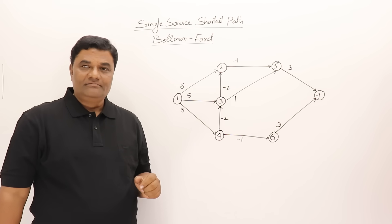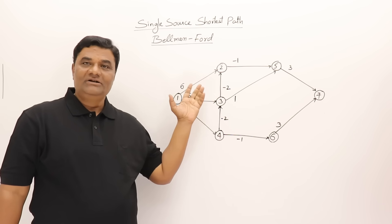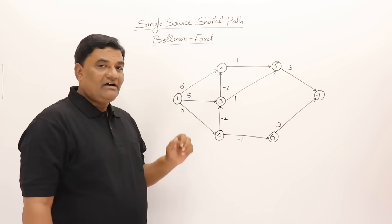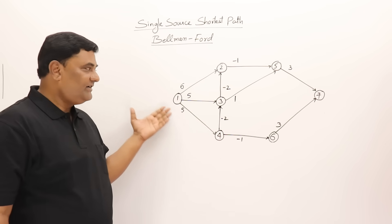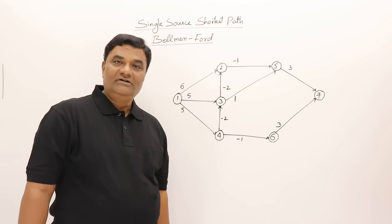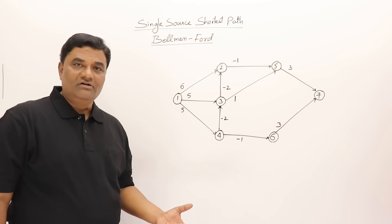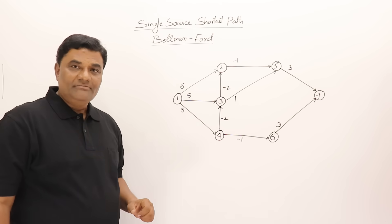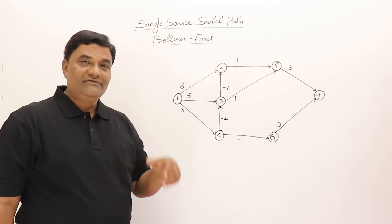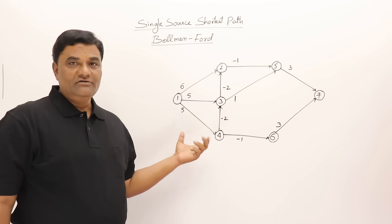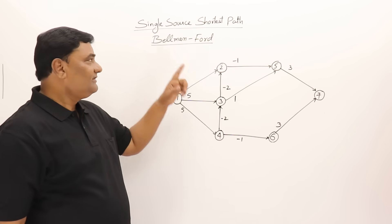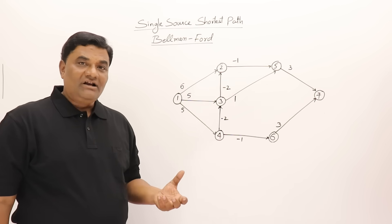The topic is single source shortest path problem. In this video I'll show how the Bellman-Ford algorithm works and also the drawback of Bellman-Ford. The problem is: in a directed weighted graph, we select one vertex as the source vertex and find out the shortest path to all other vertices. We already have Dijkstra's algorithm, but Dijkstra will not work if there are negative edges — it may or may not give the correct result. So we want an algorithm that confirms correct answers, and that algorithm is Bellman-Ford. It follows dynamic programming strategy.